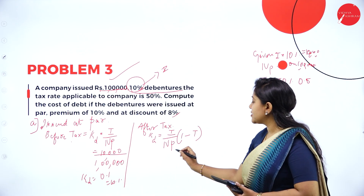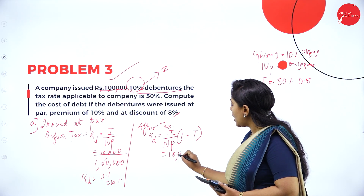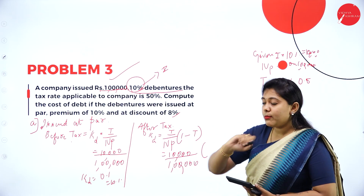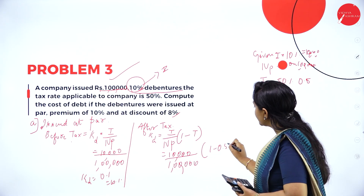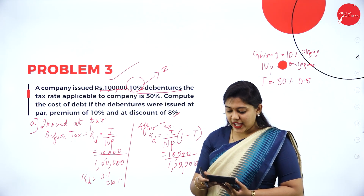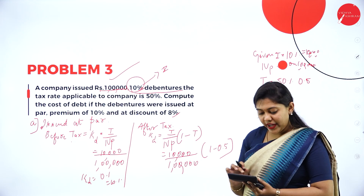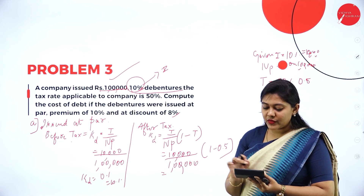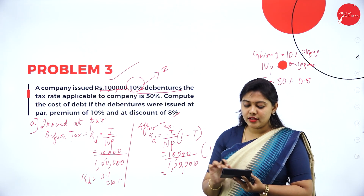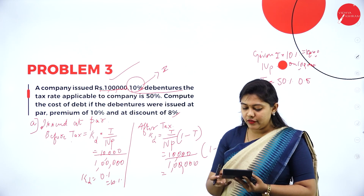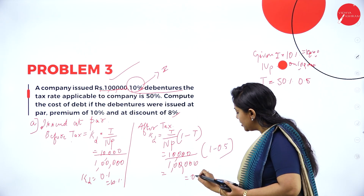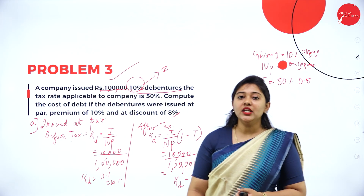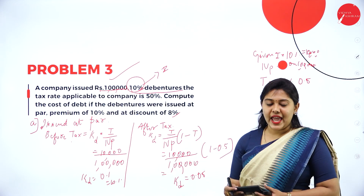After tax formula for irredeemable debt: interest divided by net proceeds, multiplied by (1 minus tax rate). Interest is 10,000, net proceeds is 1 lakh, tax rate is 0.5. So, 1 minus 0.5 = 0.5. Therefore, 10,000 divided by 1,00,000 into 0.5 = 0.05. Cost of debt after tax, issued at par, is 0.05.